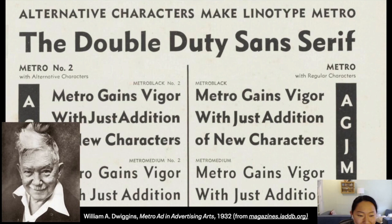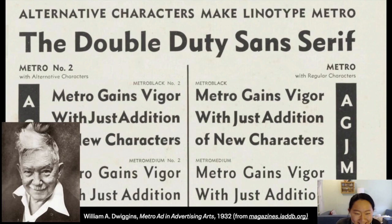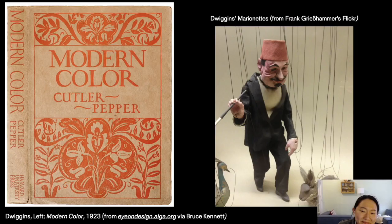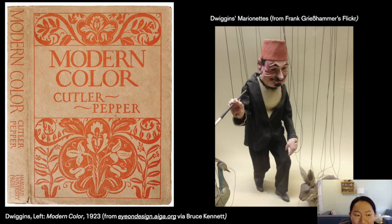Here is Metro, which he designed almost as a bet — he had an article published where he was wishing there was a better sans serif out there, and someone from Linotype said, well, why don't you make one? And he did, and it was Metro, and it was great. He also carved really realistic-looking marionettes in his free time. A press release from 1937 introduced Dwiggins as a calligrapher, type designer, typographer, a technician in many untrodden ways of illustration and decoration, notable type designer, puppeteer and an authority on puppeteer joints and manipulation, a thinker, and writer. He seems like a character who is having a resurgence — there's a new book on Dwiggins I highly recommend.